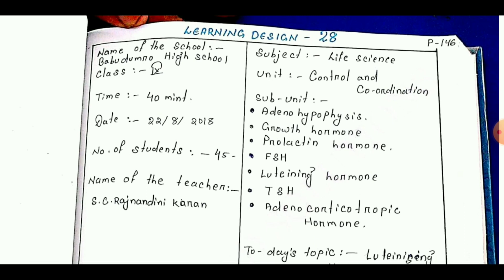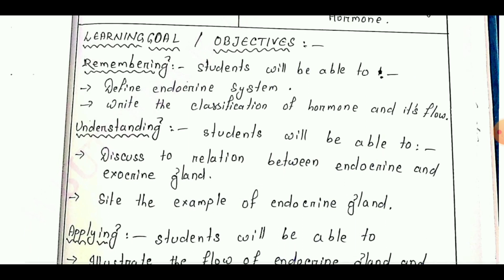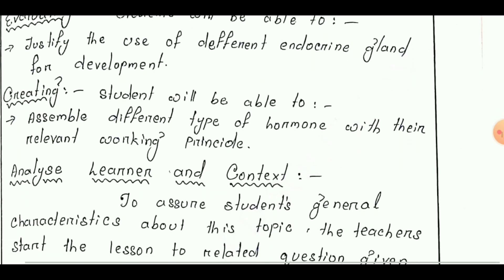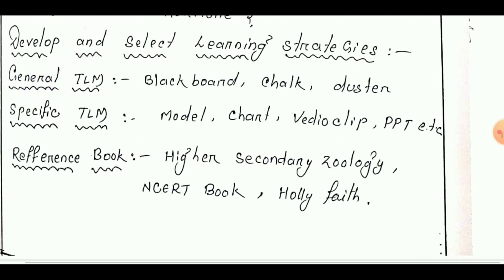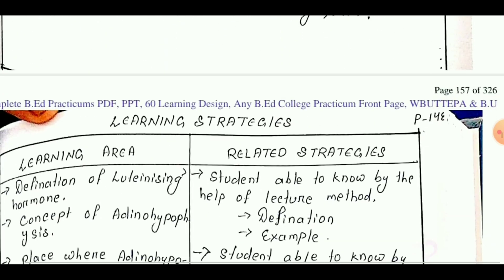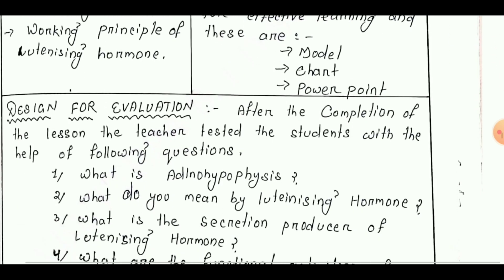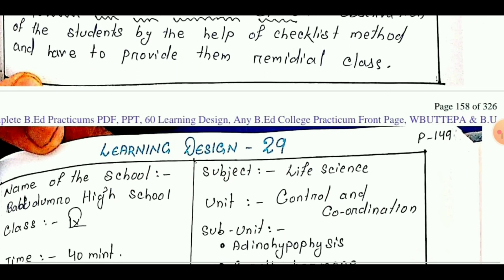We have reached learning design number 28, taken from Class 9. Today's topic is 'Luteinizing Hormone.' Learning goals are: remembering, understanding, applying, analyzing, evaluating, and creating. Next point is analyze learner and context, then develop and select learning strategies. Next is learning strategy, then design for evaluation, and diagnosing the weakness for remedial class.